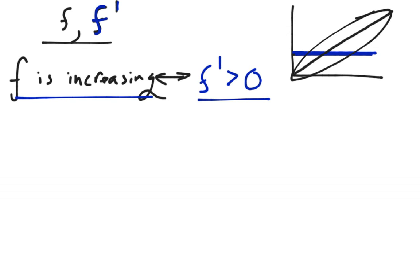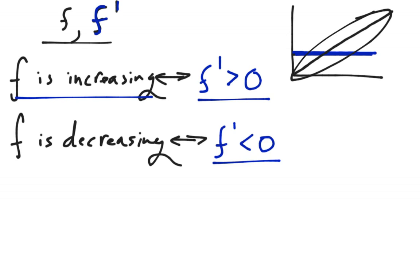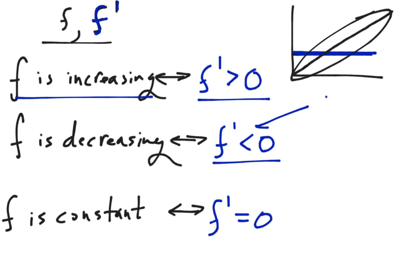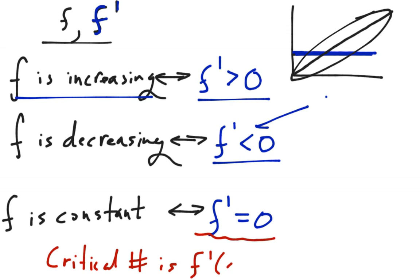Similarly, if f is decreasing, then f prime is less than zero. We can tie this back into slopes: if f prime is less than zero, that means we have a negative slope, so f is decreasing. The last possibility is that f prime equals zero, and if f prime equals zero, that means f is going to be constant because it has a slope of zero. Also, remember our definition of a critical point: a critical number is where f prime of c is zero or undefined.